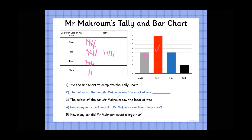Well done if you managed to get your tally chart correct. Question 2: the colour of the car Mr Macram saw the most. When looking at bar charts or tally charts, we look for the most frequent — the thing that comes up the most. The car Mr Macram saw the most was red. That's the most frequent or most popular car colour.